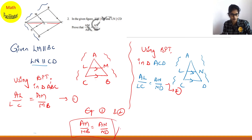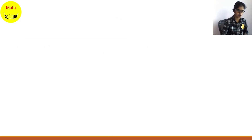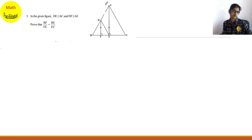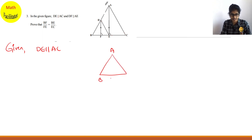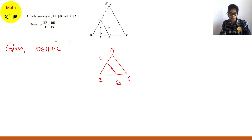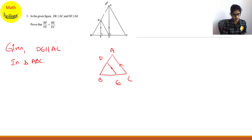Let's move on to question 3. In the given figure, DE is parallel to AC. Taking triangle ABC, when DE is parallel to AC, using BPT we can say BD/AD = BE/EC, or equivalently BD/AB = BE/EC depending on the starting point. This is equation 1.